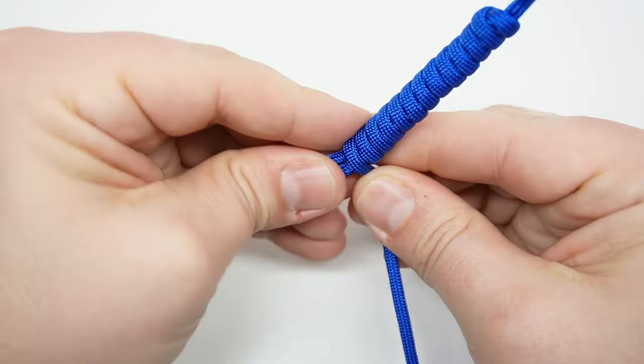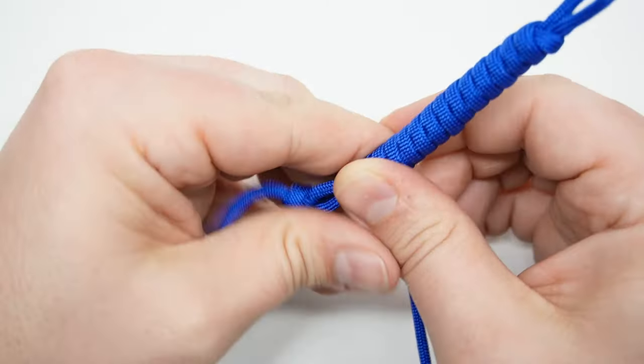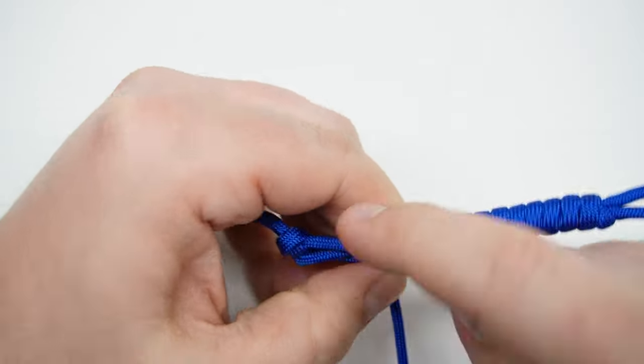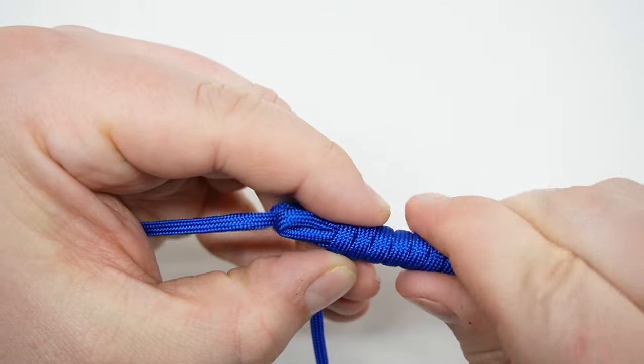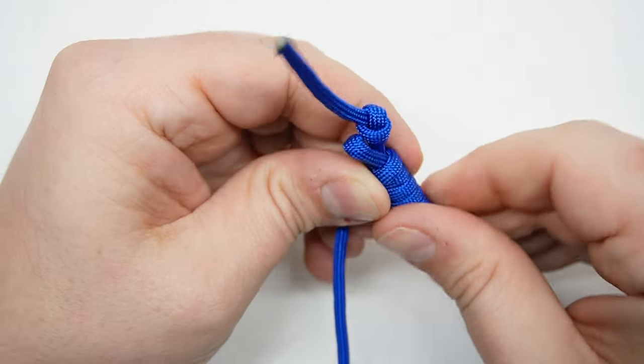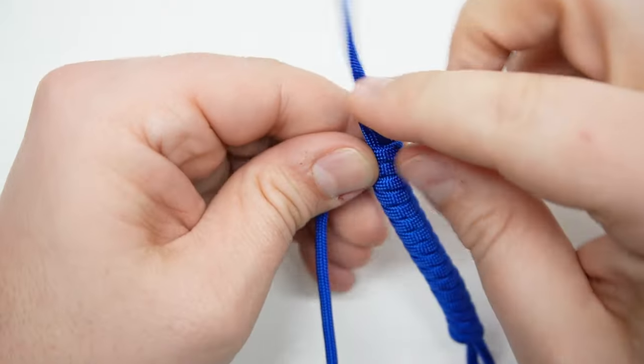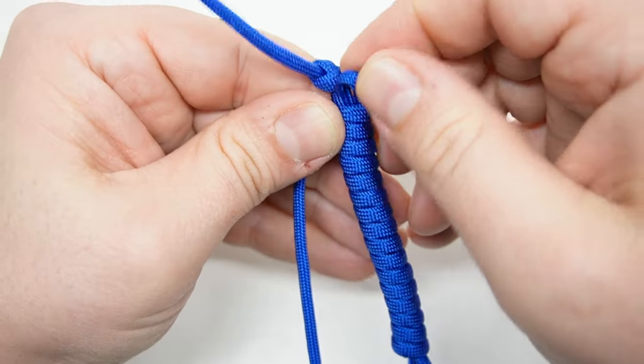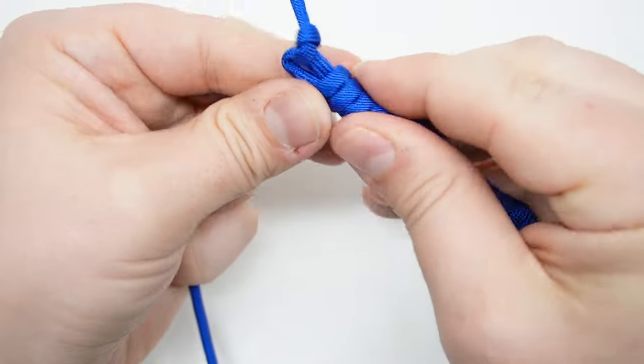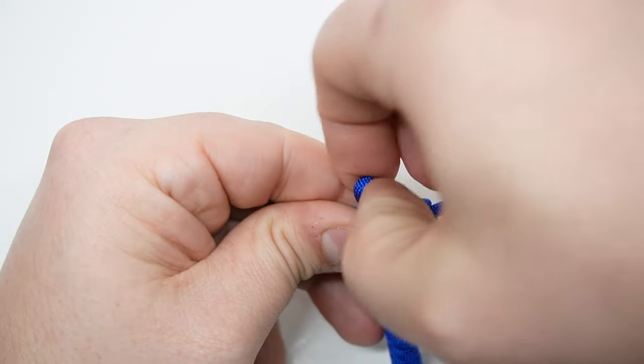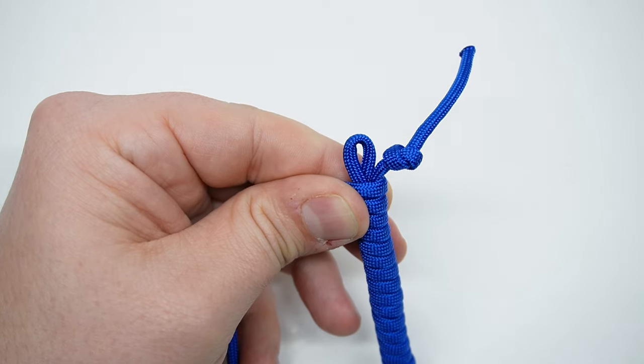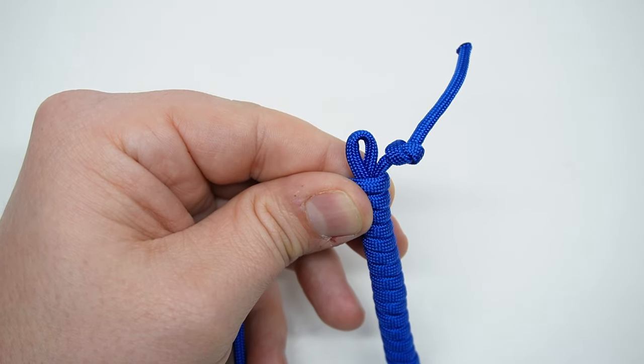This will work with shoelaces too, any kind of flexible cord or rope. When we start getting down to this other end here, it is easier to just use this end and twist that. You want to leave a loop here, enough of a loop for two cords to pass.